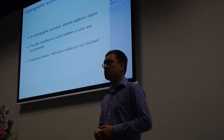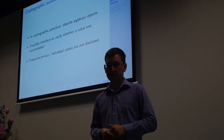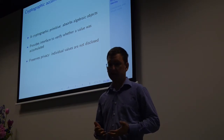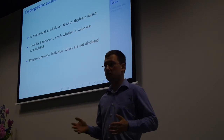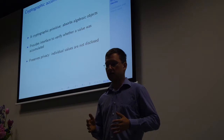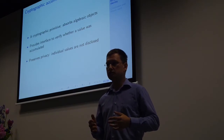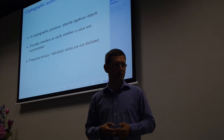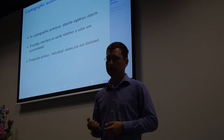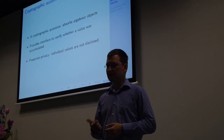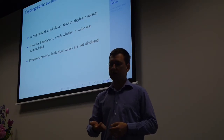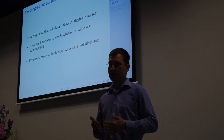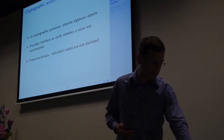Our main cryptographic technique is called a cryptographic accumulator. This is a cryptographic object that can absorb certain values — it accumulates them — and then can be used to prove in zero knowledge that certain values were or were not accumulated. Importantly, it is impossible to extract individual values from the accumulator. If you want to check whether some value was accumulated, you can query the accumulator and it returns yes or no. In that sense, it preserves privacy.